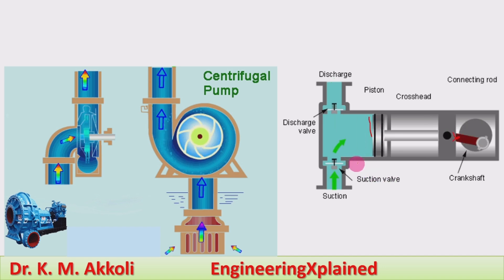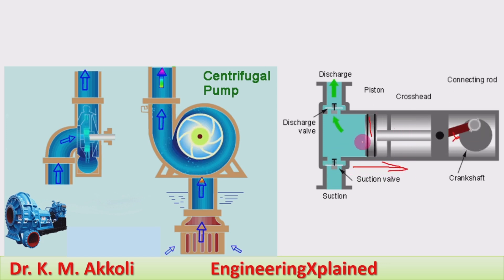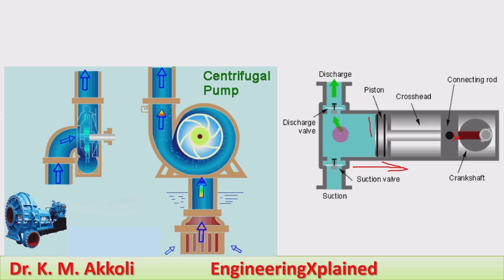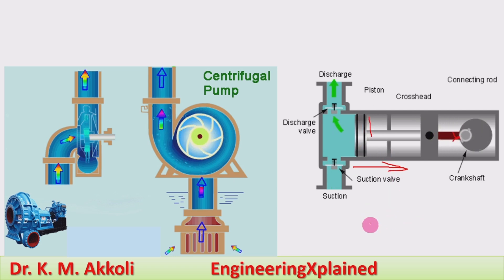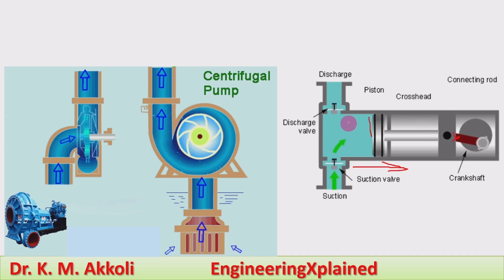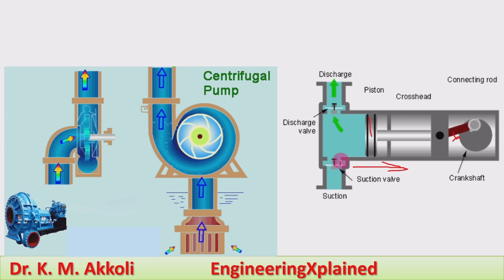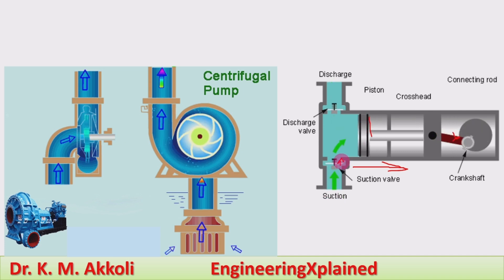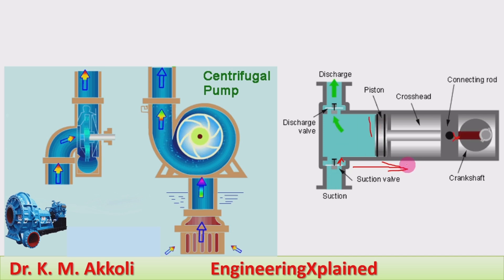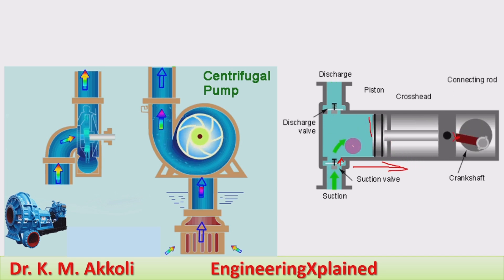This is the piston. The piston reciprocates inside the cylinder. When the piston is moving backward, a vacuum is created inside — the pressure falls below atmospheric pressure. Since outside pressure is atmospheric and inside is below atmospheric, there is a vacuum. Then the delivery valve gets closed, and due to that vacuum, the inlet valve gets opened and fluid flows into the cylinder during the return stroke of the piston.